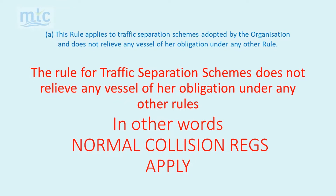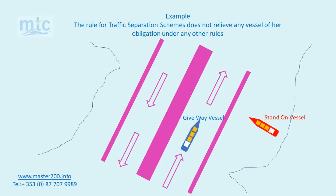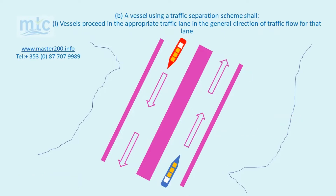Let's now have a look at an example. In this example, the blue vessel has the red vessel on her starboard side. This means that the blue vessel is the give way vessel and the red vessel is the stand on vessel. In other words, normal collision regulations apply.